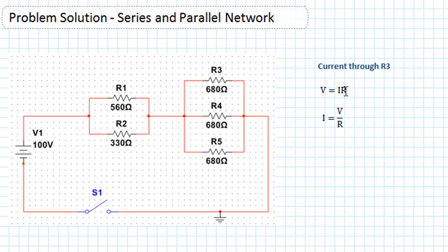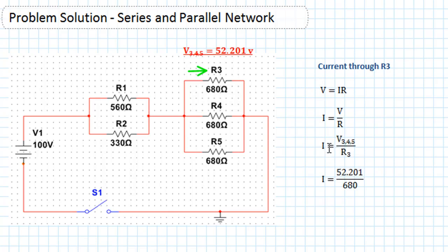The final part of the question is to work out the current flowing through resistor R3. The voltage drop across that network is 52.201 volts and R3 = 680 ohms. Substituting into Ohm's law: I = 52.201 / 680 = 0.07677 amps, which in standard form is 76.77 milliamps.